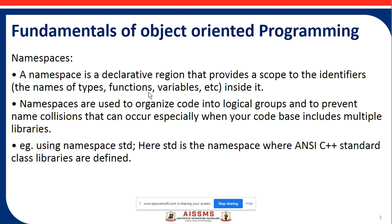The first fundamental of object-oriented programming is namespaces. A namespace is a declarative region that provides a scope to the identifiers — the names of types, functions, variables, etc. — inside it. Namespaces are used to organize code into logical groups and to prevent name collisions.